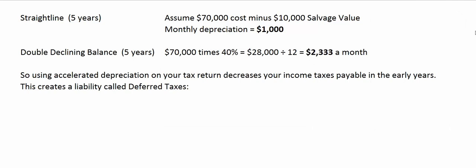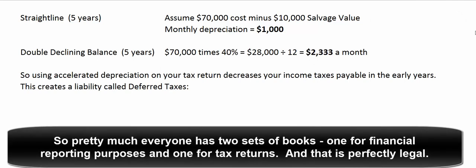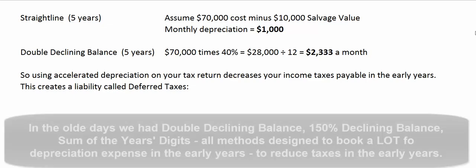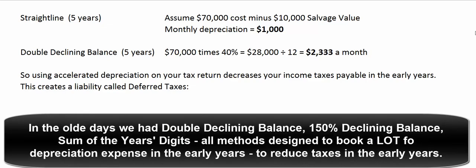That's great for our books, but we kind of want to book more depreciation early on. So we look at methods to book accelerated depreciation. On our tax return, we want a big depreciation expense number so we have a small income taxes payable number. In the old days we had double declining balance, 150% declining balance, sum of the years' digits — all these exotic methods that accounting books still discuss.